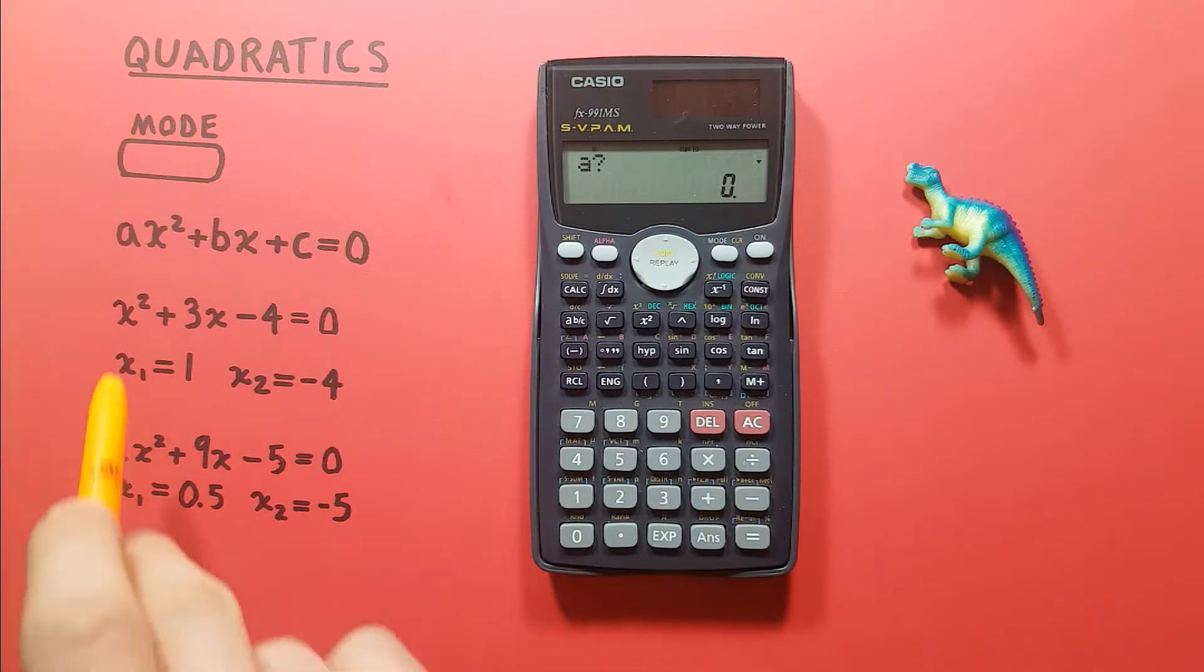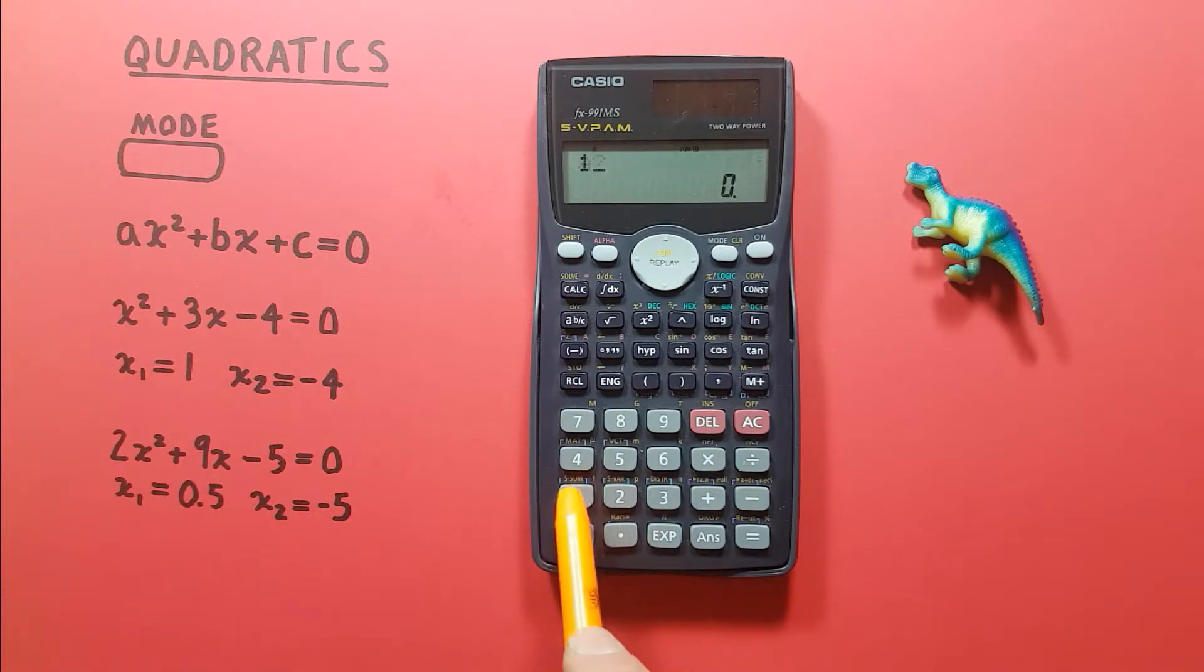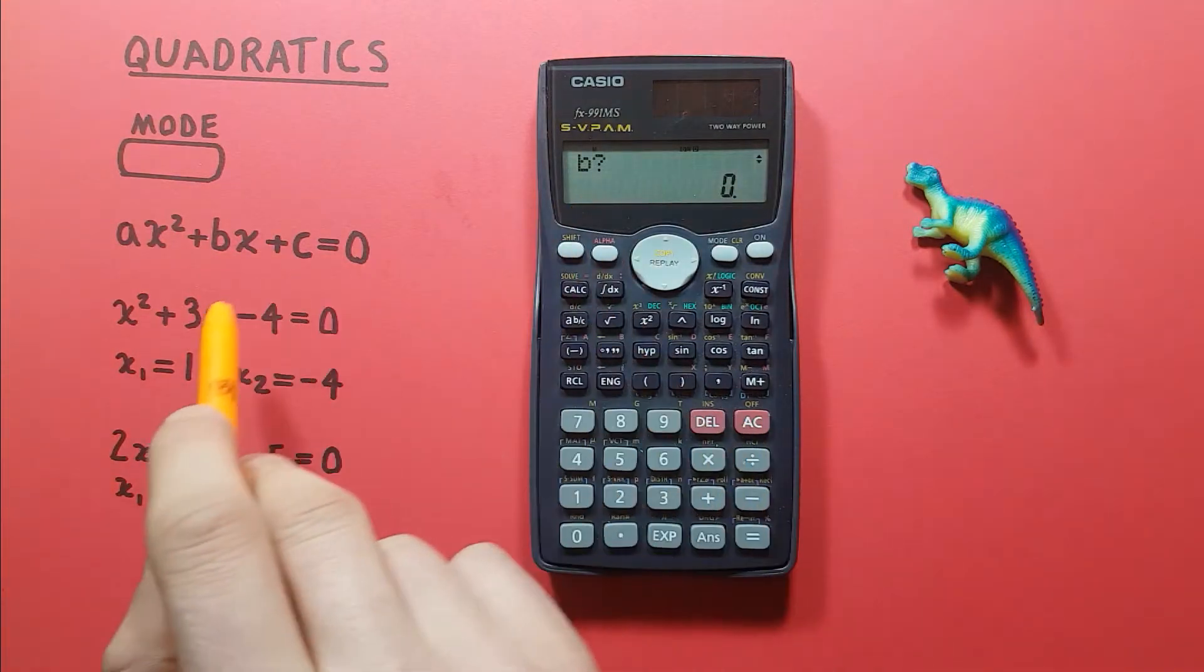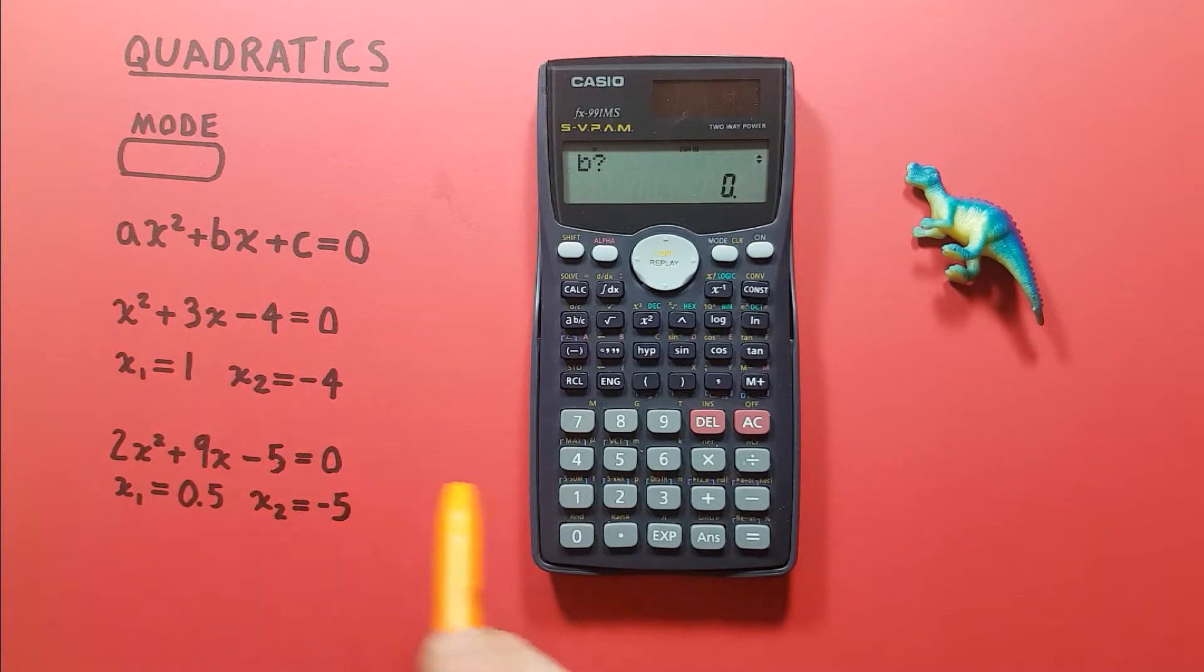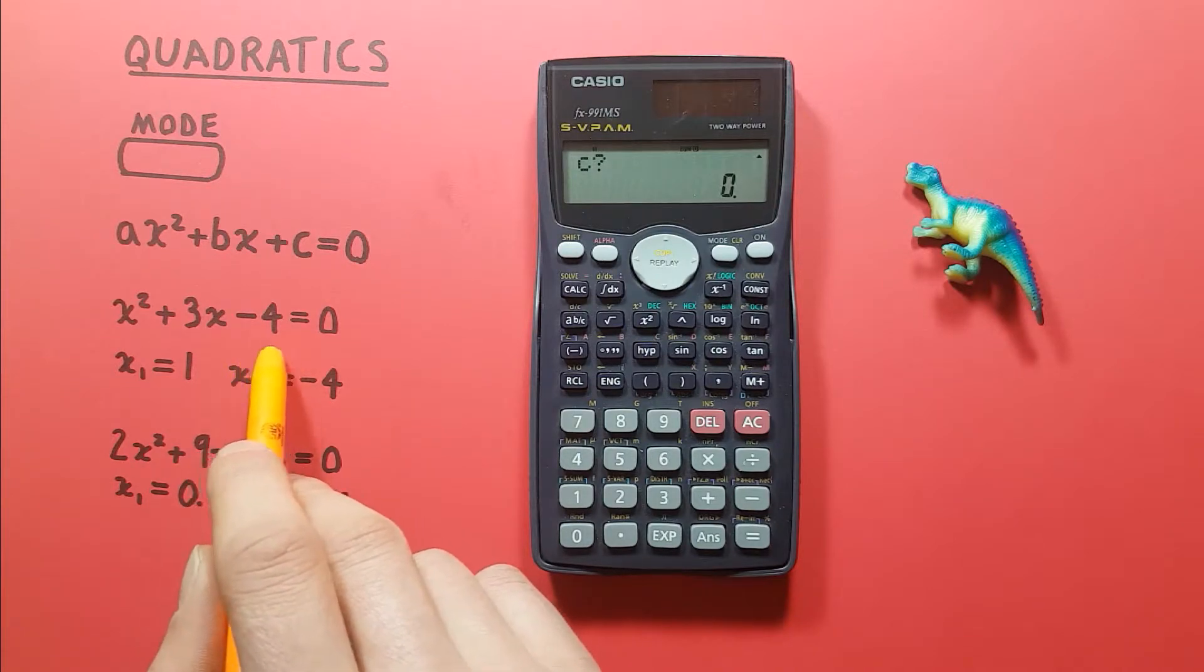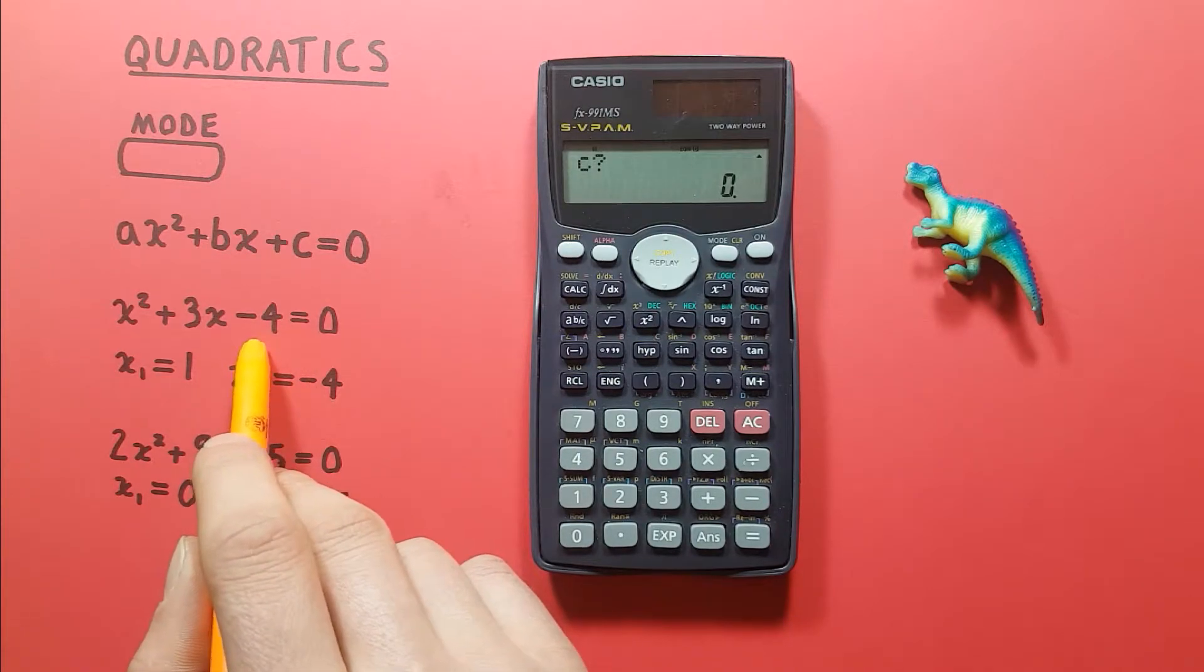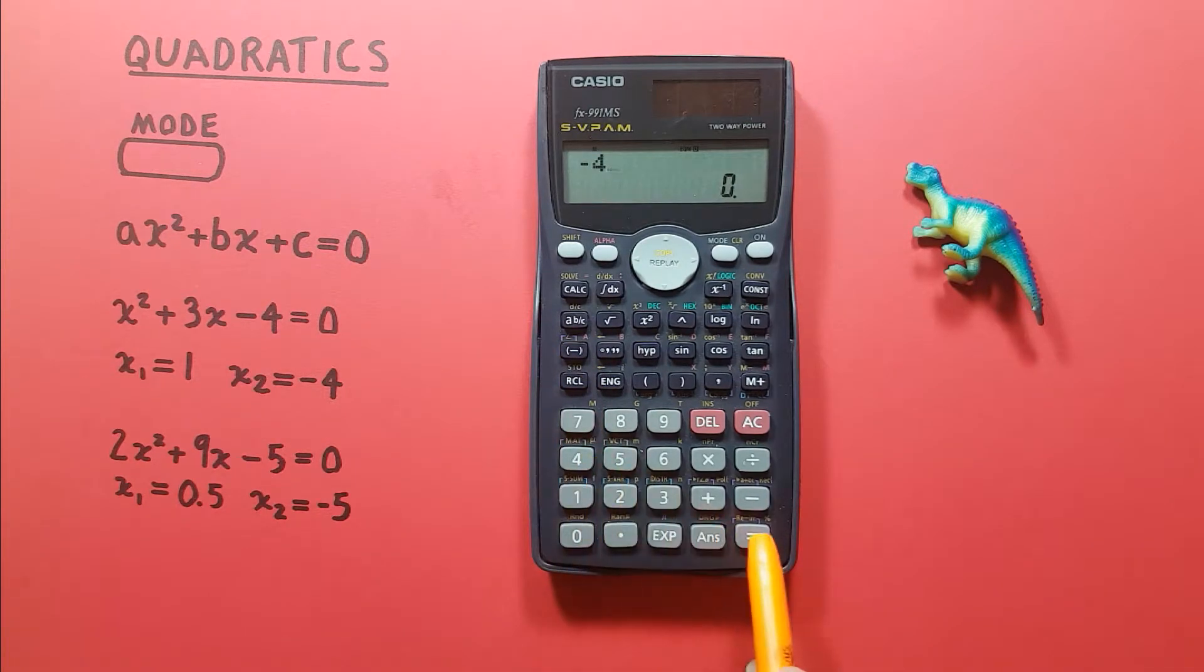A will be the number that goes with the X squared. So for this example we have 1, press equals. Then it asks for our B. B is the number that goes with the X, so for this it's 3. And then it'll ask us for C, which is the number that doesn't have an X. So in this case it'll be negative 4. Press the negative first, 4, equals.